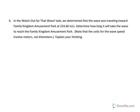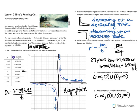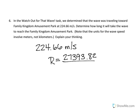Our last question in this lesson is question 6. It says in the Watch Out for That Wave task, we determined that the wave was traveling towards Family Kingdom Amusement Park at 224.66 meters per second. Determine how long it'll take the wave to reach Family Kingdom Amusement Park. So here we know our speed: 224.66 meters per second, and we know that our function is rate equals 27,393.82 divided by time.